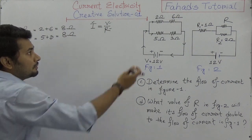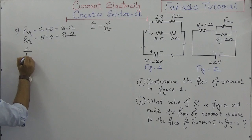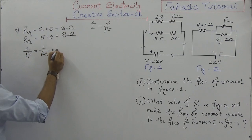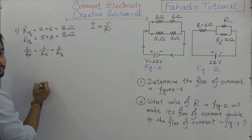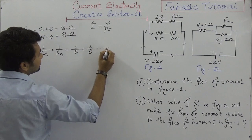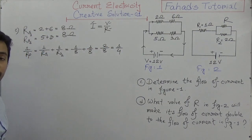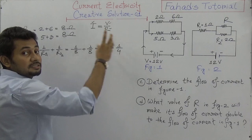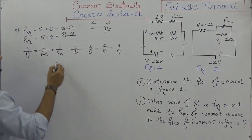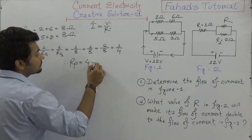We need to find the equivalent resistance of the whole circuit, which involves a parallel connection. So RP is found using one over RP equals one over RS1 plus one over RS2, which gives one over eight plus one over eight. That equals two over eight, or one over four. Since this is the reciprocal of RP, we get RP equals four ohms.